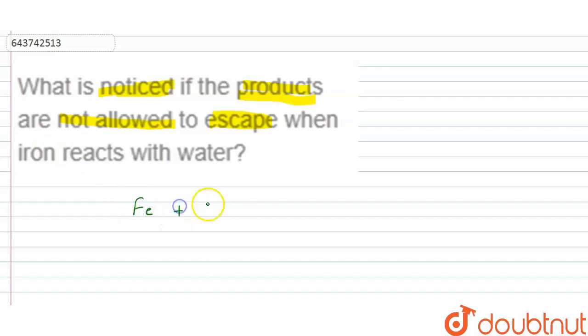When iron, that is Fe, reacts with water it forms the product ferric oxide and along with it hydrogen gas is liberated.